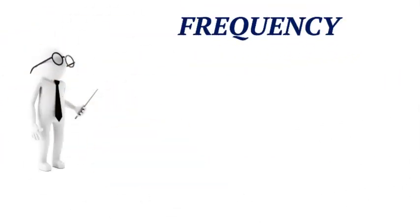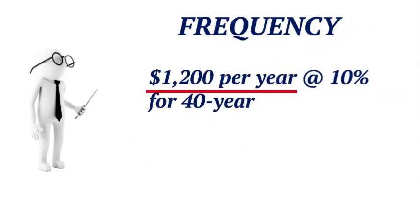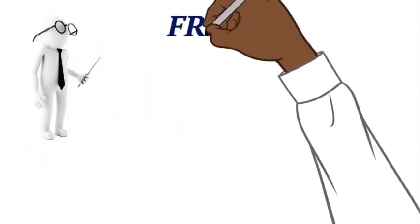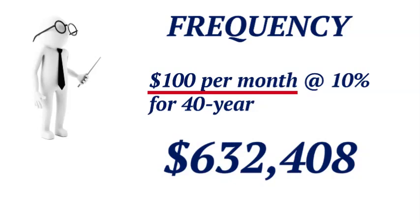Now let's talk about frequency. Suppose you're saving $1,200 a year at 10% for 40 years, compounding annually. At the end of 40 years, you'll have $531,111. Now, if we change the frequency from annual to monthly — putting $100 in per month, earning 10% for 40 years — you'll have $632,408. That's more than $100,000 more by compounding on a monthly basis.